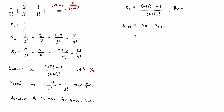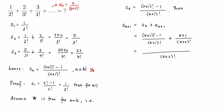So this is equal to S of k — that is (k+1) factorial minus 1, all over (k+1) factorial — and then a sub k+1 is equal to (k+1) over (k+2) factorial. Combining this into a single fraction, we have (k+2) factorial as denominator, divide by (k+1) factorial leaving k+2, so we have k+2 times the numerator (k+1) factorial minus 1, distribute to get minus (k+2), and then plus the numerator of the second fraction, which is k+1.